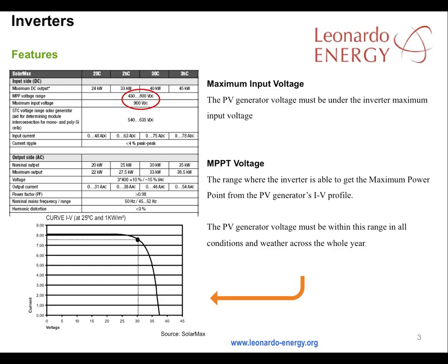You must also consider the maximum power point voltage. The MPPT voltage is the range in which the inverter is able to get the maximum power from the PV generator's IV profile. The IV profile is a graph of current versus voltage from a PV generator as the load increases from no load to maximum load voltage. The PV generator's voltage must be within the MPPT voltage range in all conditions and weathers across the whole year.